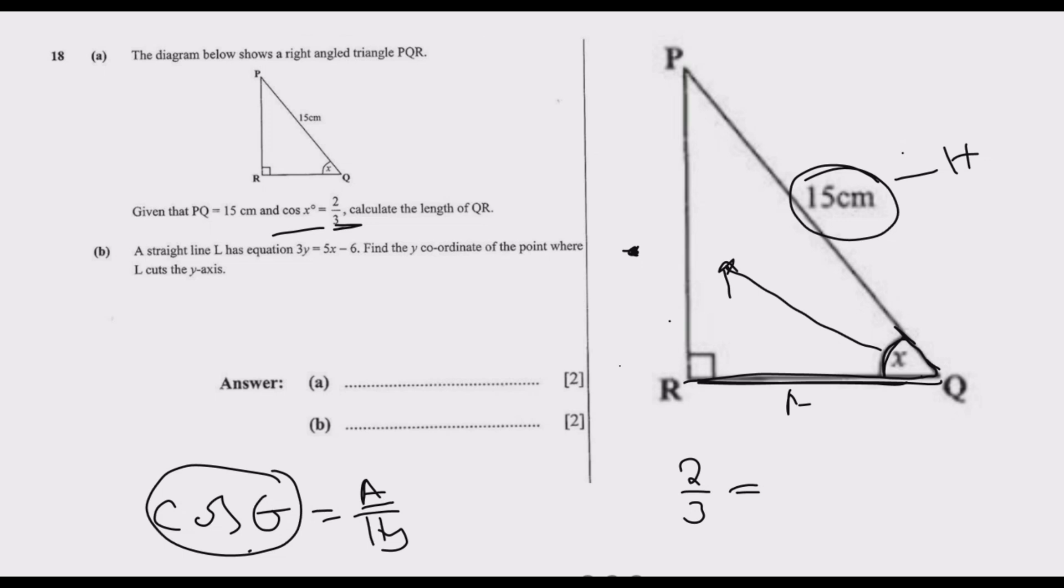So we have 2 over 3 equals x over 15. Cross multiply: 15 times 2 is 30, equals 3 times x, which is 3x. Divide by 3: 3 into 30 is 10, so x equals 10. Therefore, QR is equal to 10 centimeters.